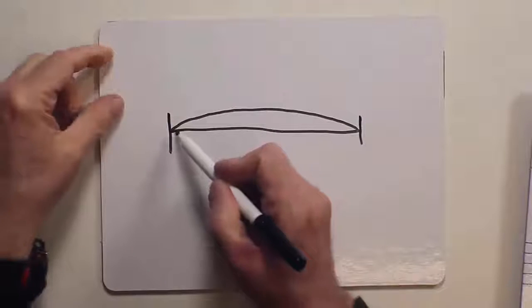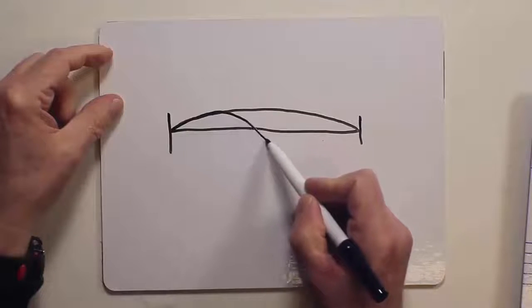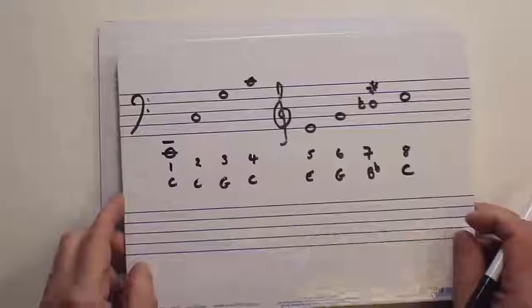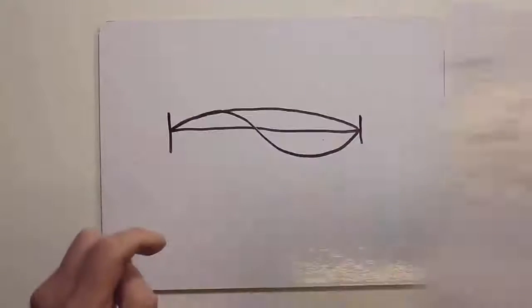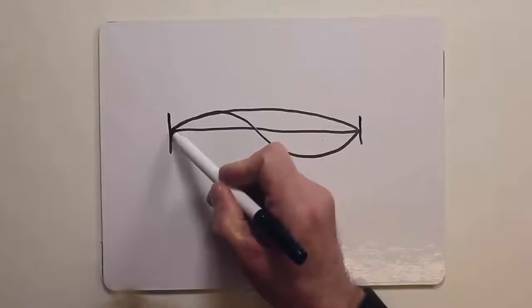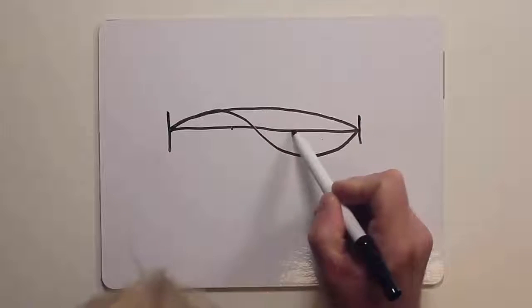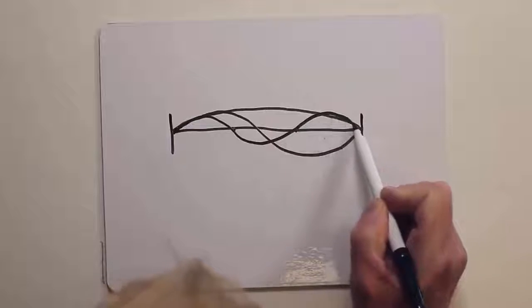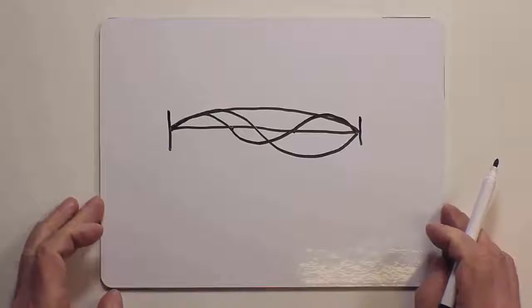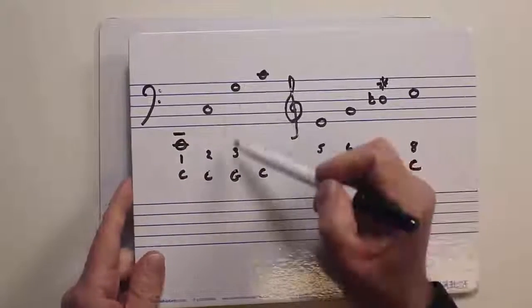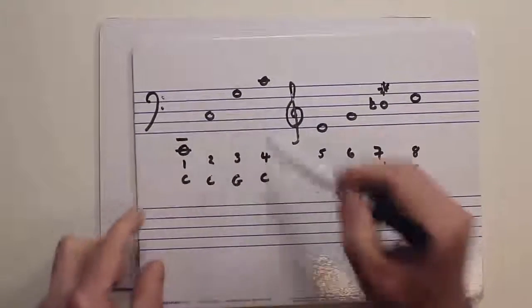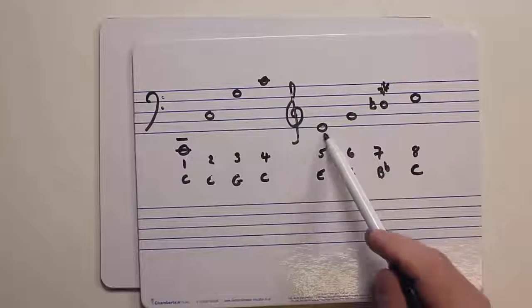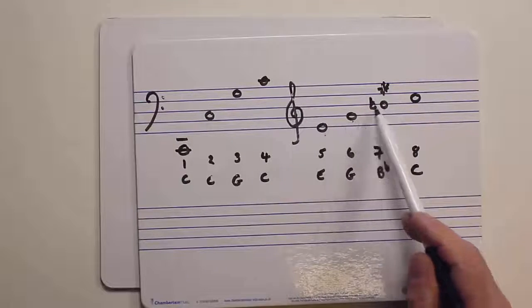But it also vibrates like this. So we've got a second note and that would also be a C, but it would be one octave up. And then it also vibrates like this. So it's vibrating again and then you get a G. And then if you vibrate it four times, you get that C again. Then fifth times, you get that E. And then sixth, you get that G and B flat.